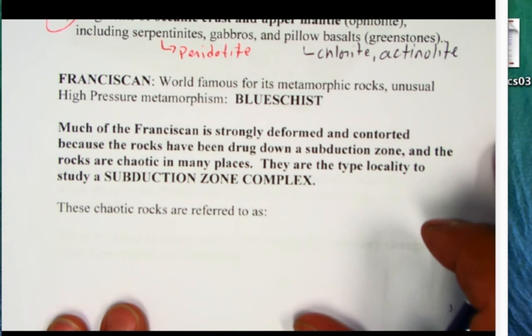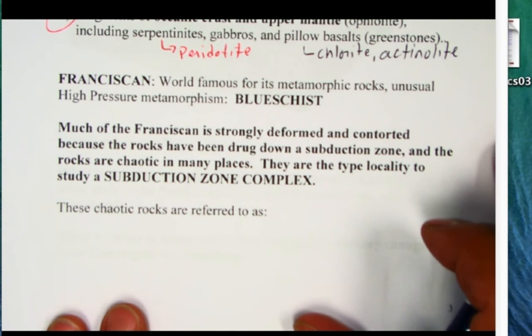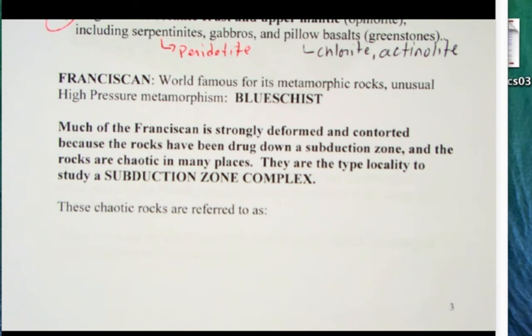Now, Franciscan is world famous for this unusual metamorphic rock that forms at high pressure and low temperature, low grade metamorphic rock but high pressure and that rock is blue schist.